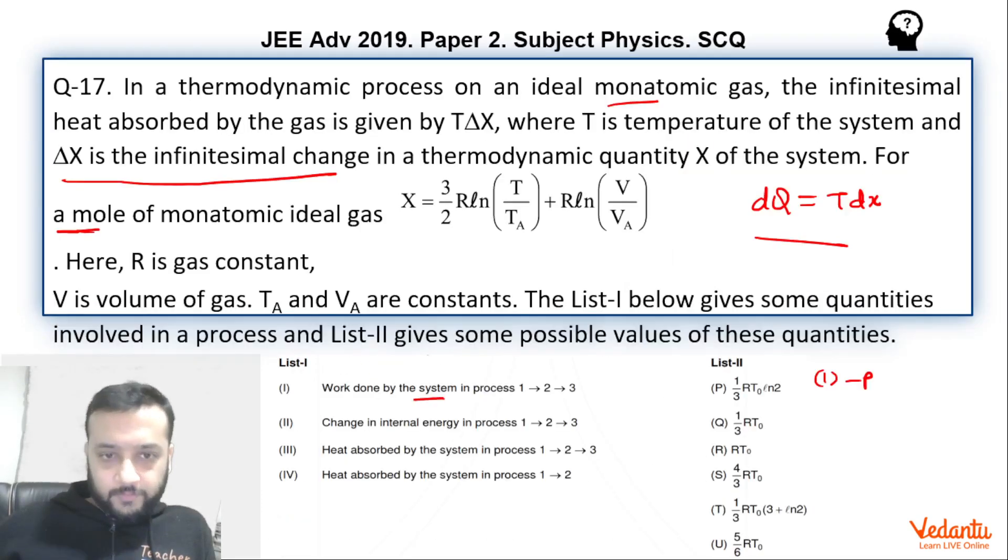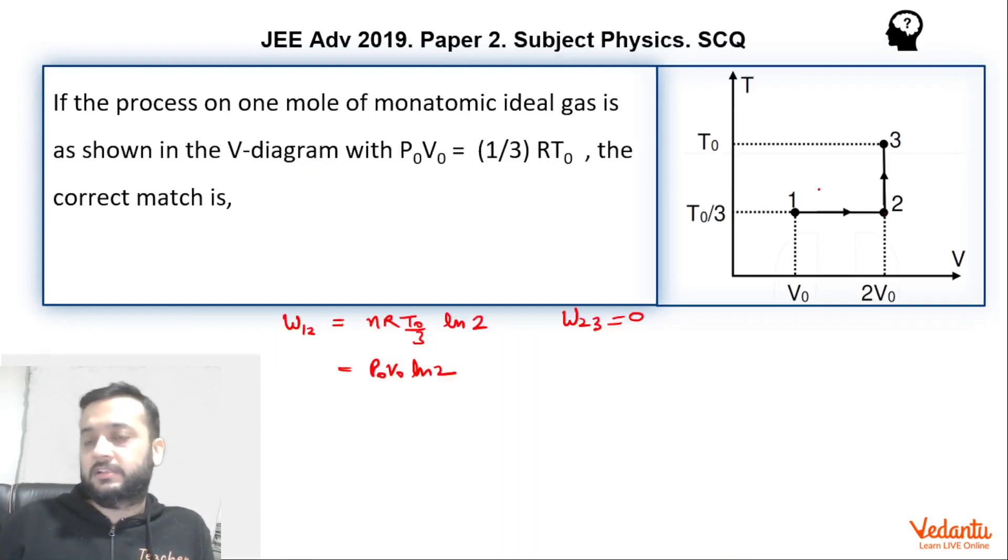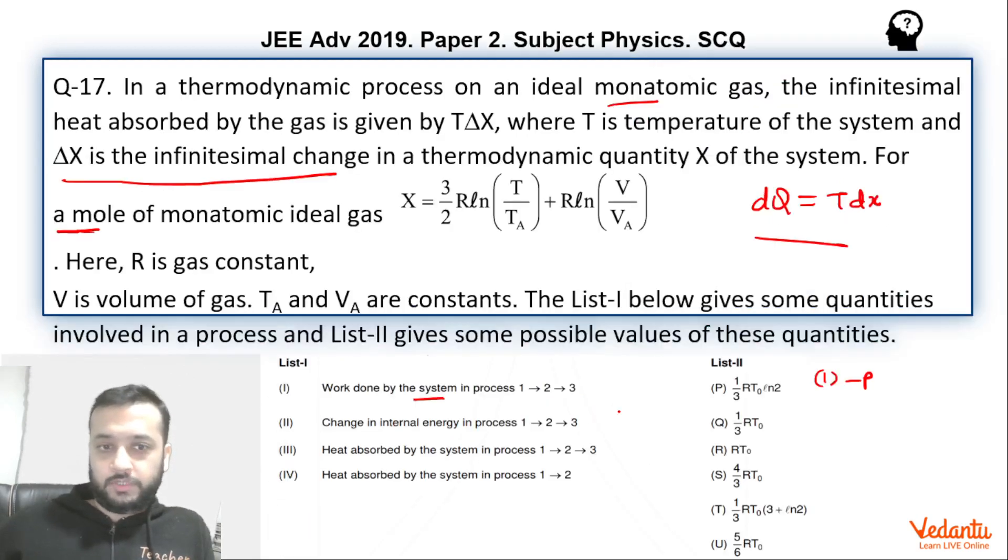Now second, what we have to find, change in the internal energy in the process 1, 2, 3. So change in the internal energy, we can say delta U value is n CV delta T. It's a state function. So n is 1. CV is 3R/2. Delta T is T0 minus T0/3, so 2T0/3. So 2 and 2 will be gone. 3 and 3 will be gone. So this will be RT0. So its match is with R. That means 2 matches with R.